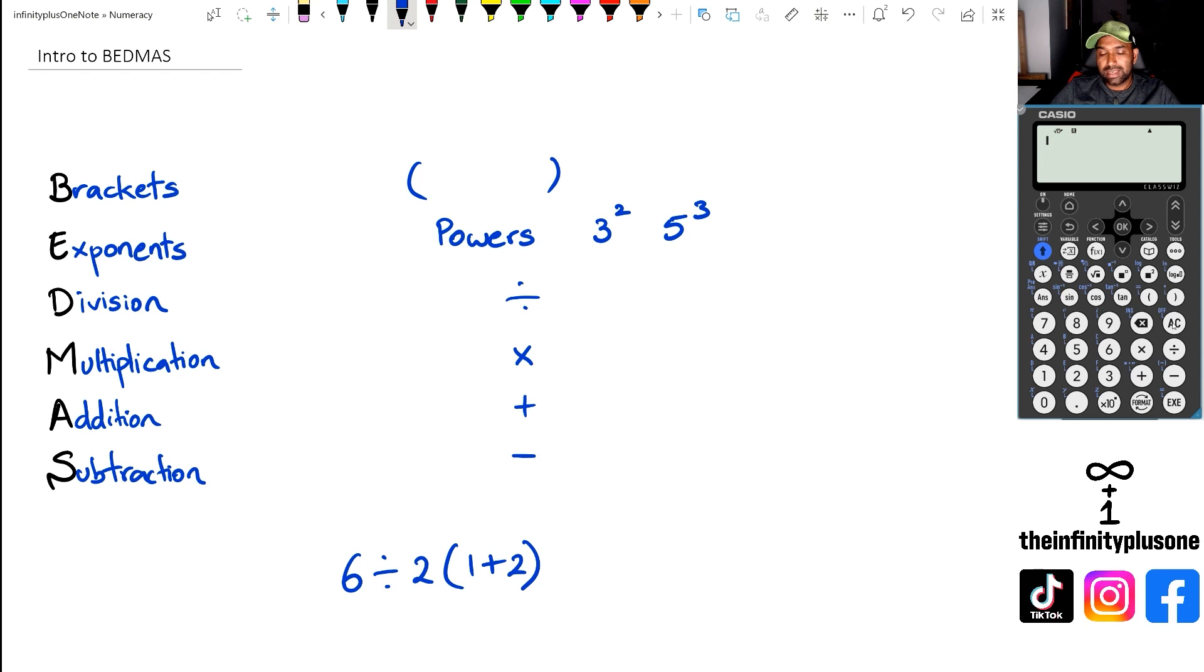Now, as mathematicians, we kind of know that that 2 is actually attached to that 1+2. So the way you do it, depending on which way you look at it, you actually end up getting two answers. And I want to show you guys the two different types of answers you could get on the calculator, because this calculator has actually picked it up.